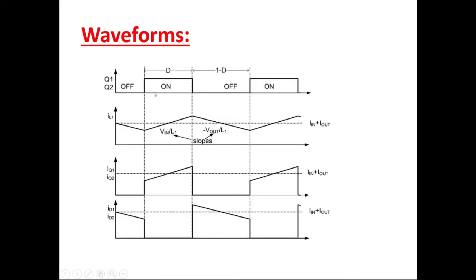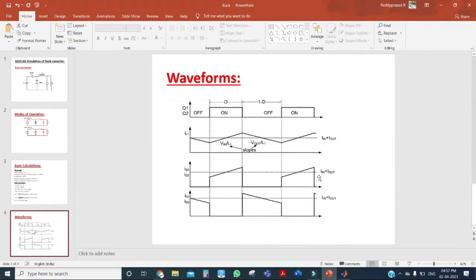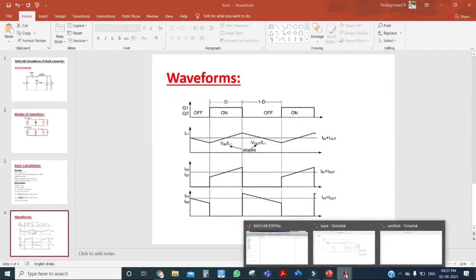If you observe the waveforms, during on state the inductor is going to charge with a certain slope, and when the switch goes to off condition the inductor is going to discharge with a corresponding slope. Now we can go for MATLAB Simulink simulation of the buck converter — this is the Simulink new file.